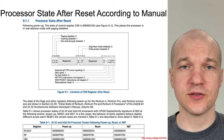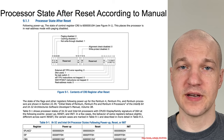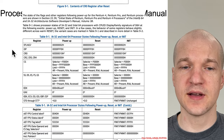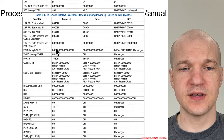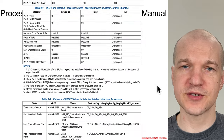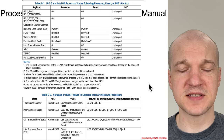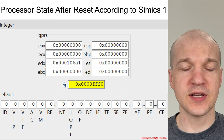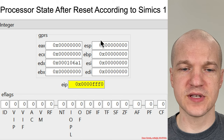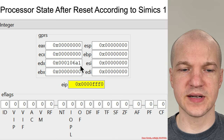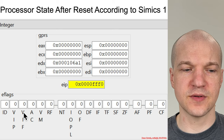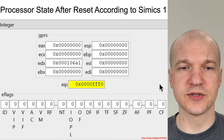So what does the processor state look like after reset according to the manual? You can go look it up and see all this nice information about the various register states. What does it look like according to SIMICS? Most of these registers are initialized to zero, EDX being the parent exception, EIP is set to FFFF0, and EFLAGS is mostly zero as well.